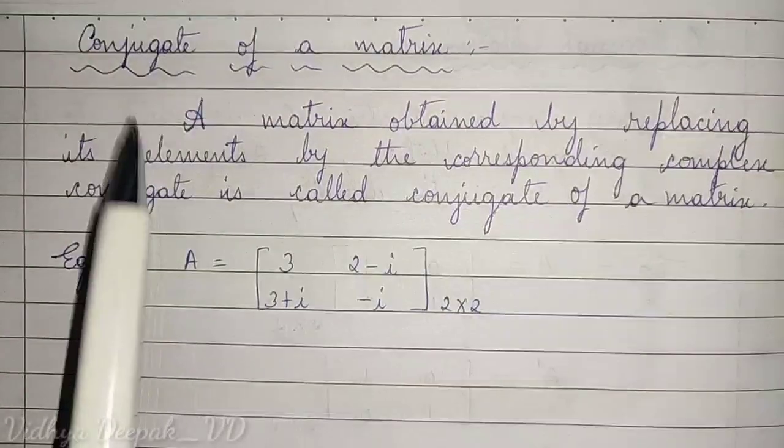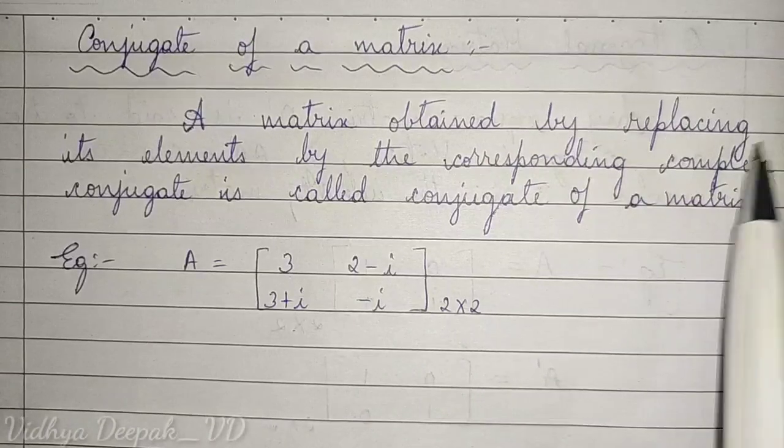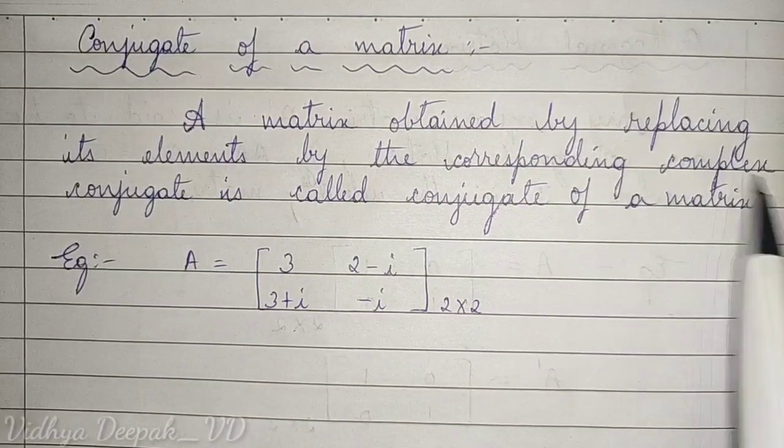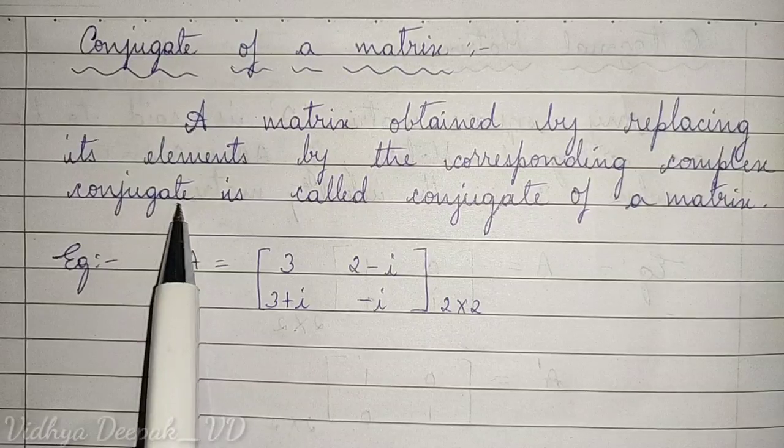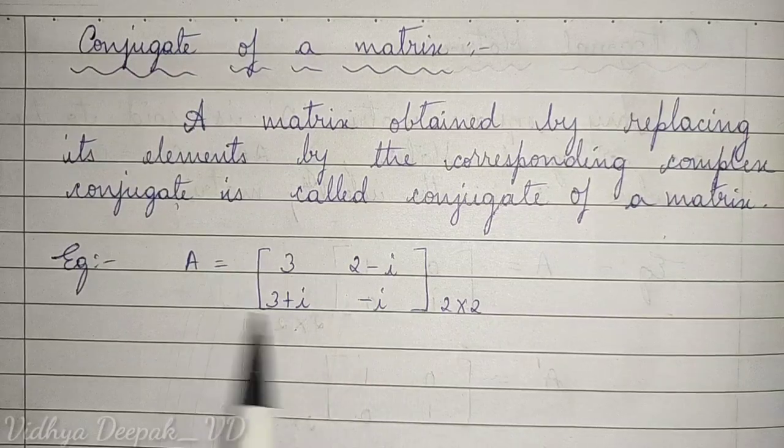Let's see what is conjugate of a matrix. A matrix obtained by replacing its elements by the corresponding complex conjugates is called conjugate of a matrix. If A is given here, A is a matrix.